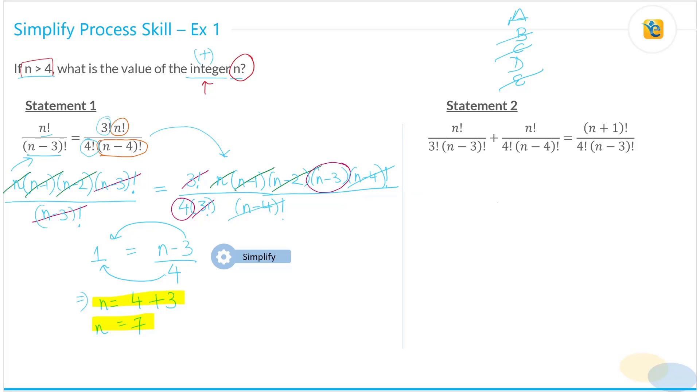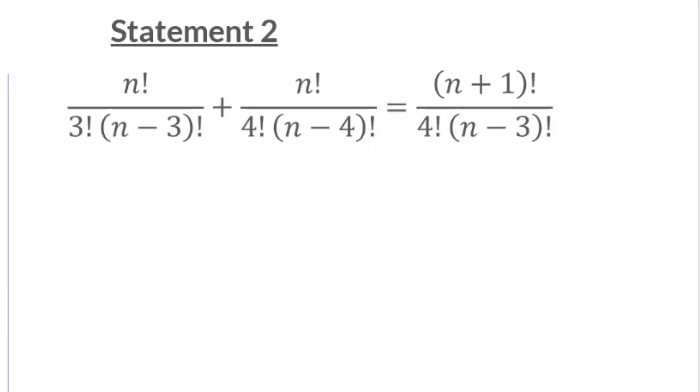Now that we have already simplified statement 1, for statement 2, we are going to follow the same principle. And this should go rather smoothly because you've already had the exercise in statement number 1. So what we can do is observe. You have N factorial in the denominator on both the terms and then you have N plus 1 factorial. So you know that you can simplify the numerator rather easily. Likewise, you see that you have 3 factorial, 4 factorial,